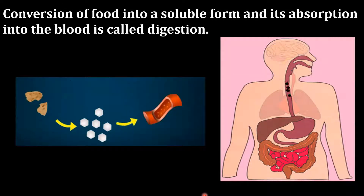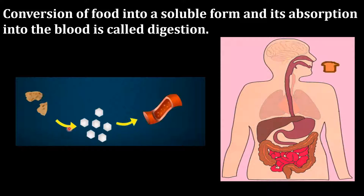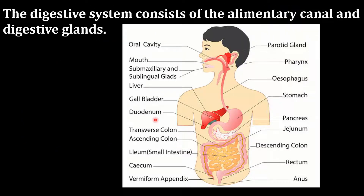Conversion of food into a soluble form and its absorption into the blood is called digestion. The digestive system consists of the alimentary canal and digestive glands.